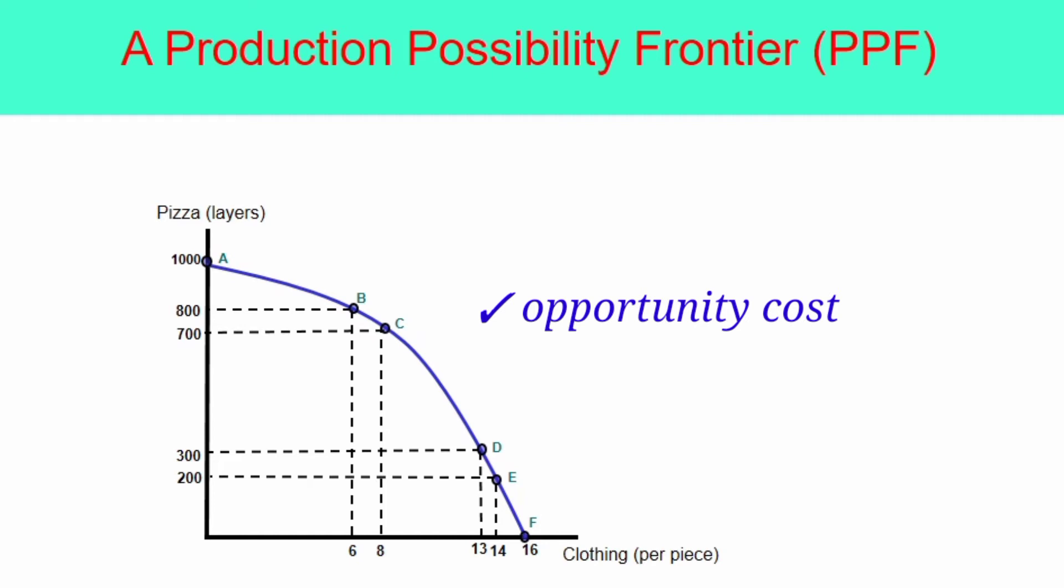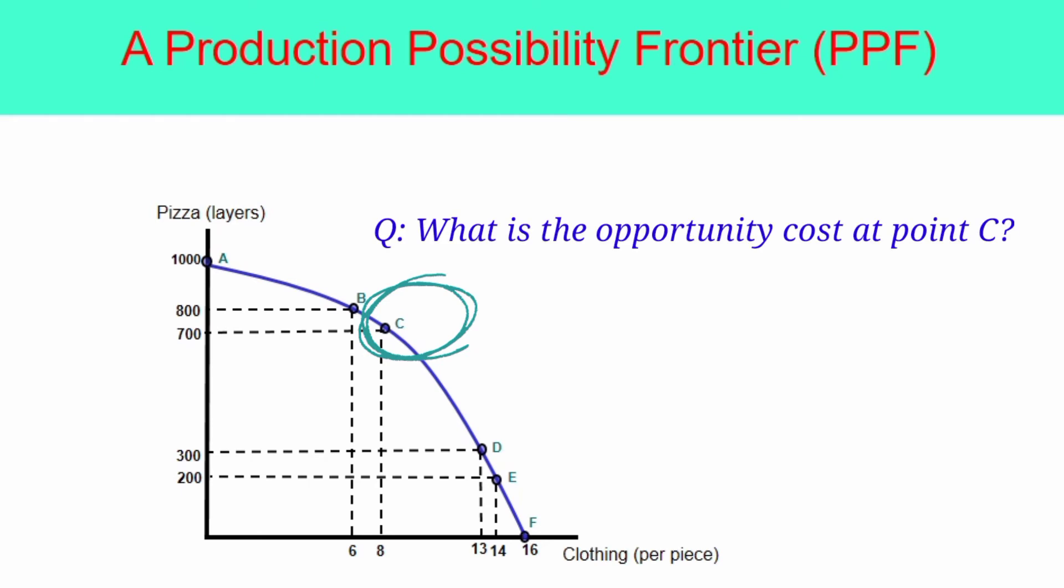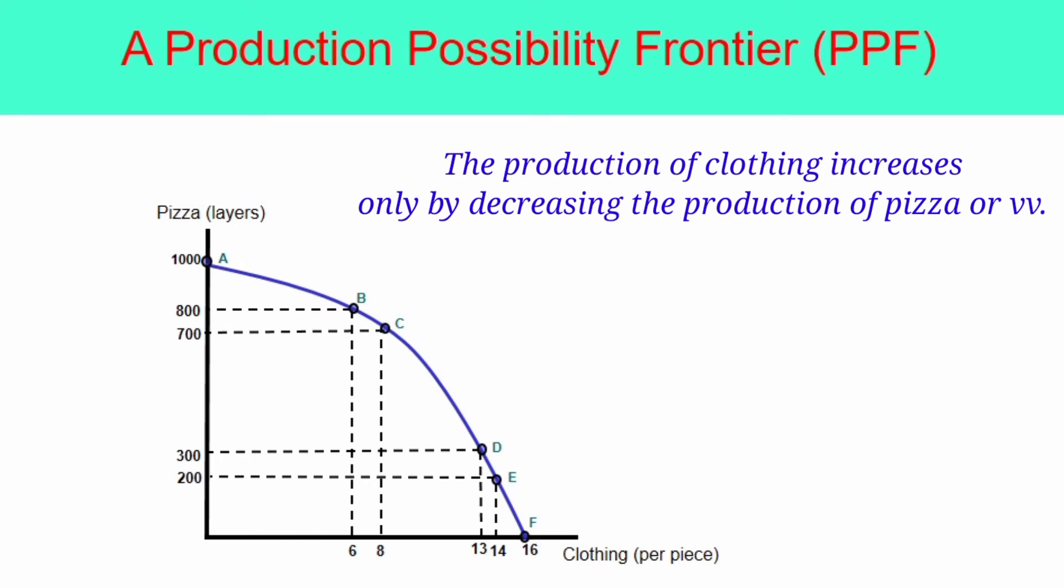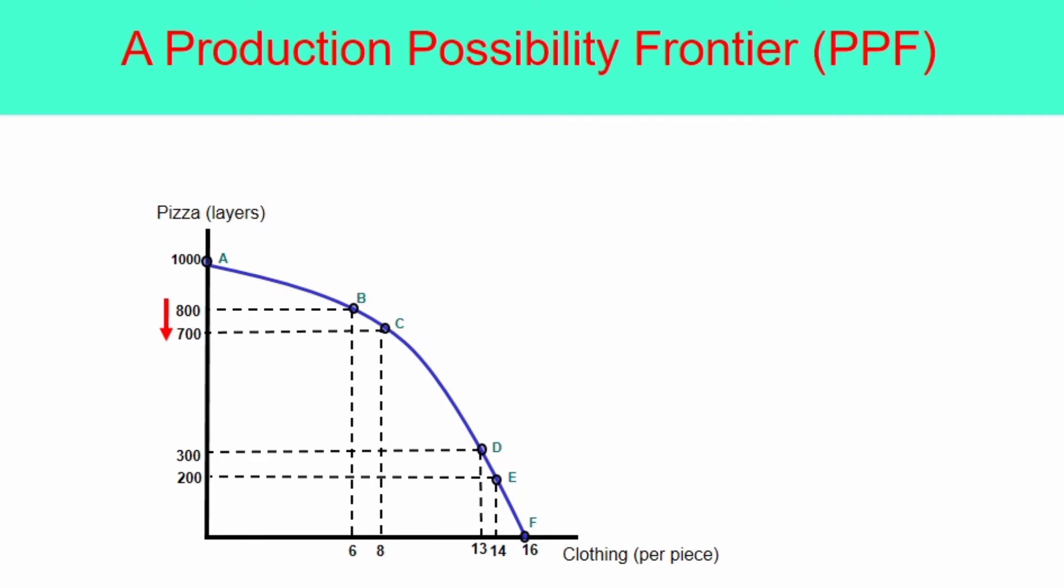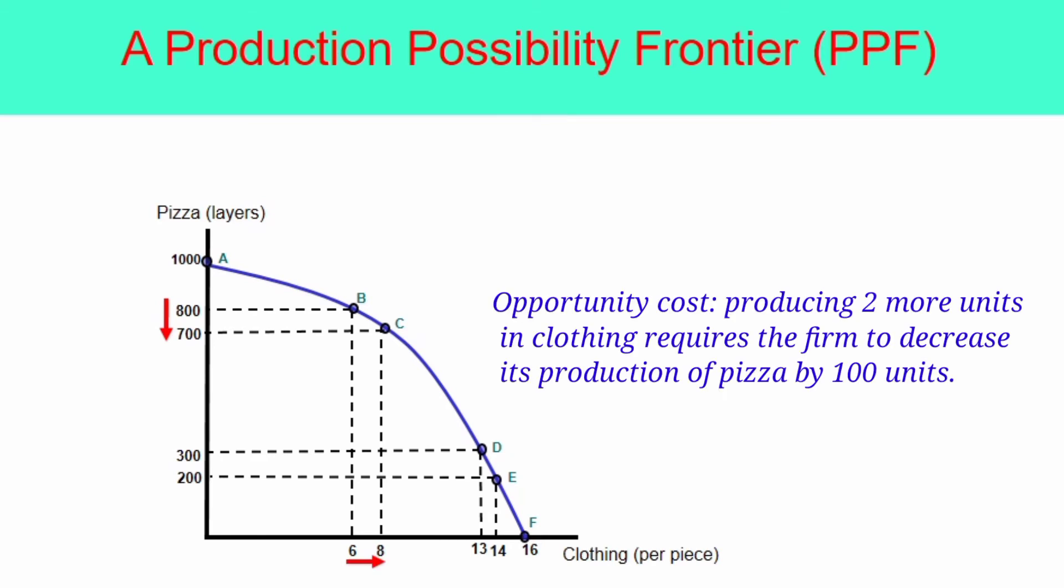Suppose the firm produces at point C, or it produces 700 layers of pizza and 8 pieces of clothing. The opportunity cost of that decision can be found by comparing the production between point B and point C. As you can see, at point B, there are 800 layers of pizza and 6 pieces of clothing. While at point C, the production of pizza has decreased to 700 while clothing has increased to 8 units. In other words, the production of pizza decreases by 100 units. While clothing increases by 2 units. This translates that the opportunity cost of producing 2 units of clothing is 100 units of pizza.